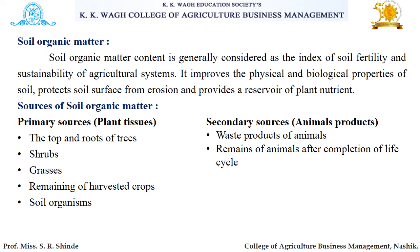There are different sources of soil organic matter — primary sources and secondary sources. Primary sources come from plant tissues such as tops and roots of trees, shrubs, grasses, remainings of harvested crops, and soil organisms. Secondary sources are waste products of animals and remains of animals after completion of their life cycle.